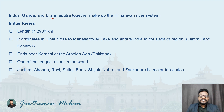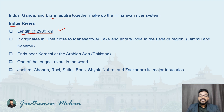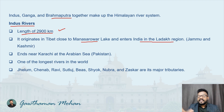Let us try to understand the Indus river system. The Indus river has a length of 2,900 km. It originates in the Manasarovar Lake, near Tibet, and enters India in the Ladakh region of Jammu and Kashmir.